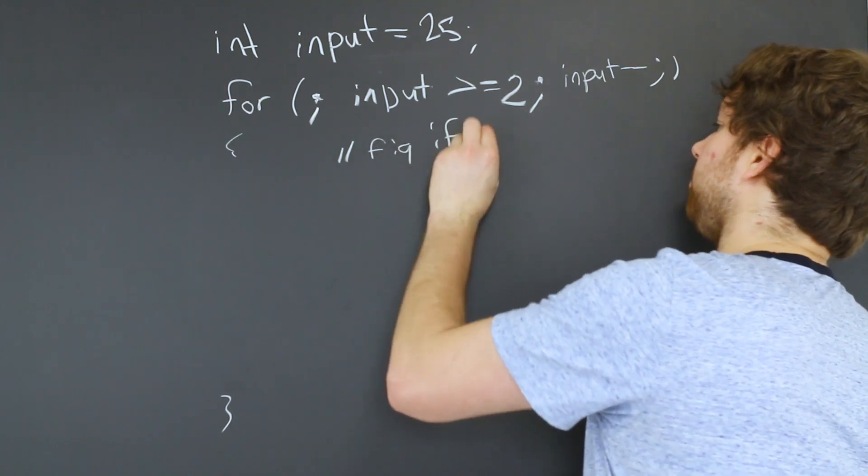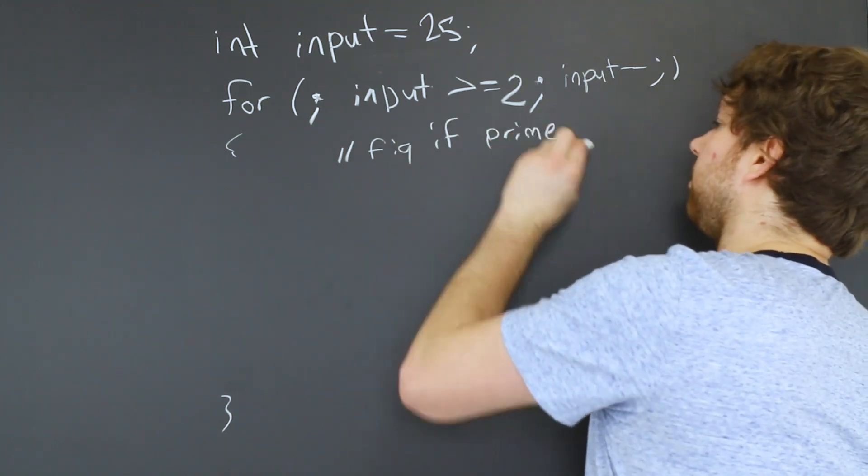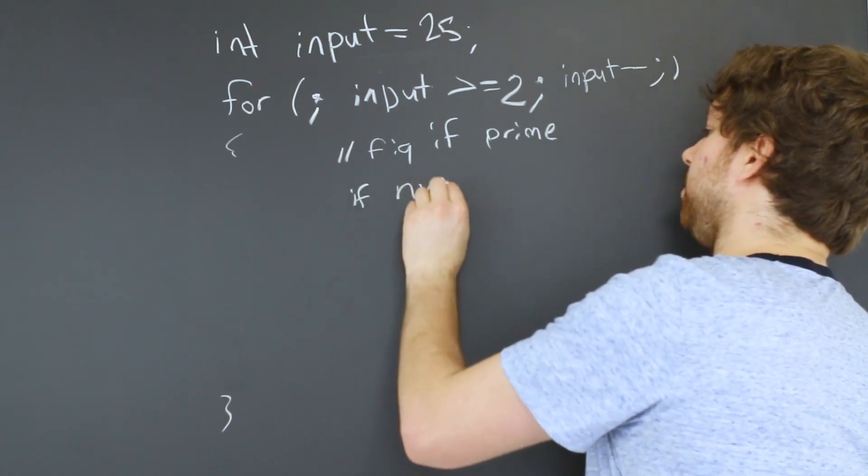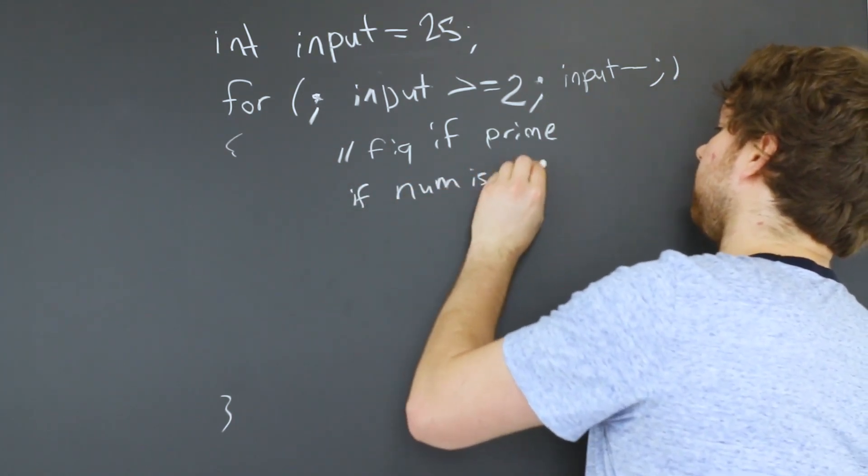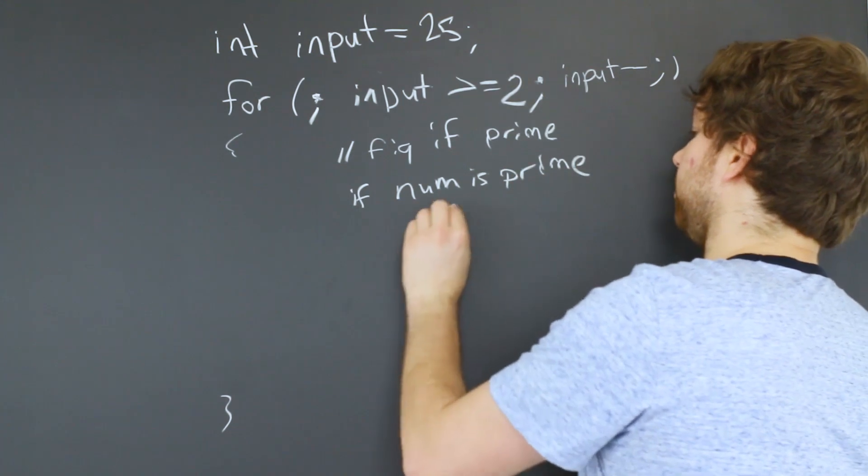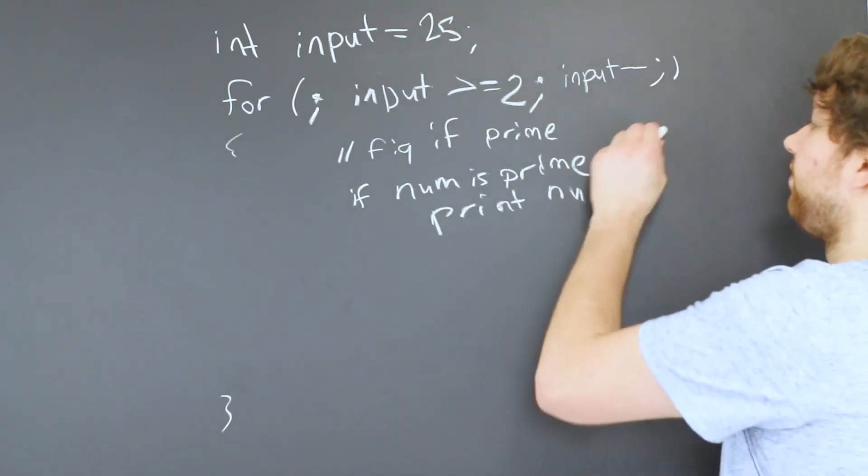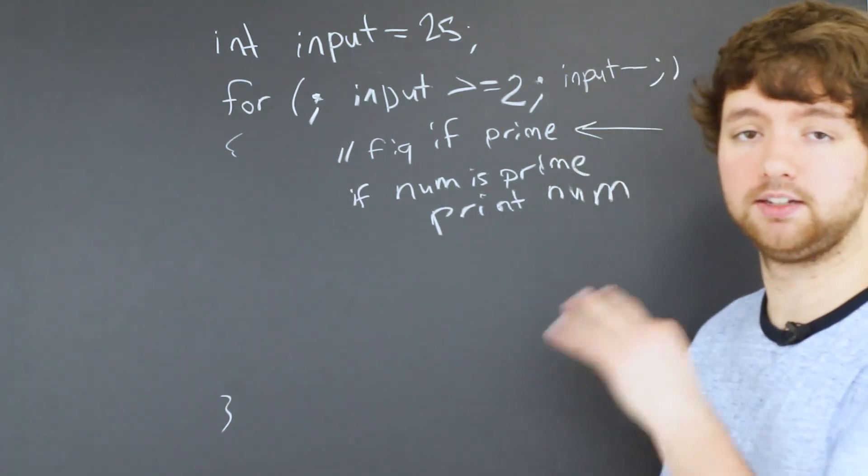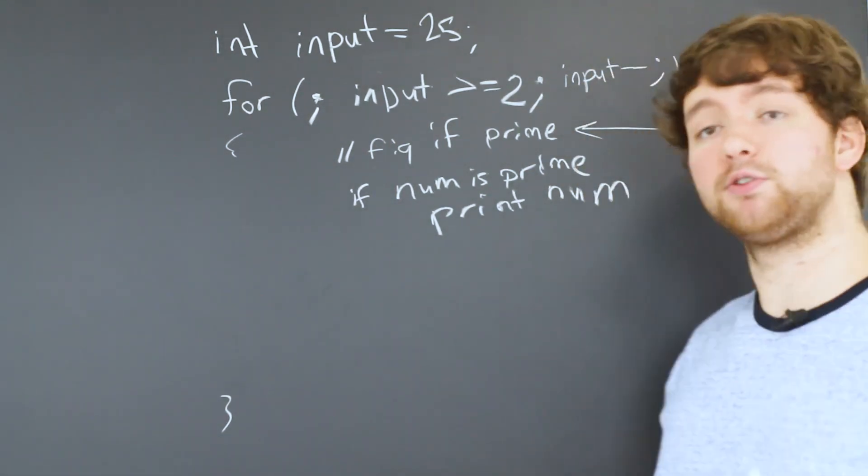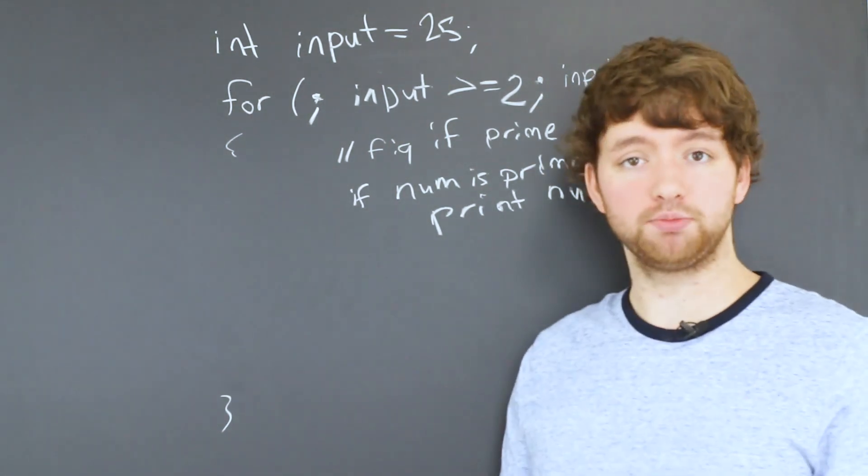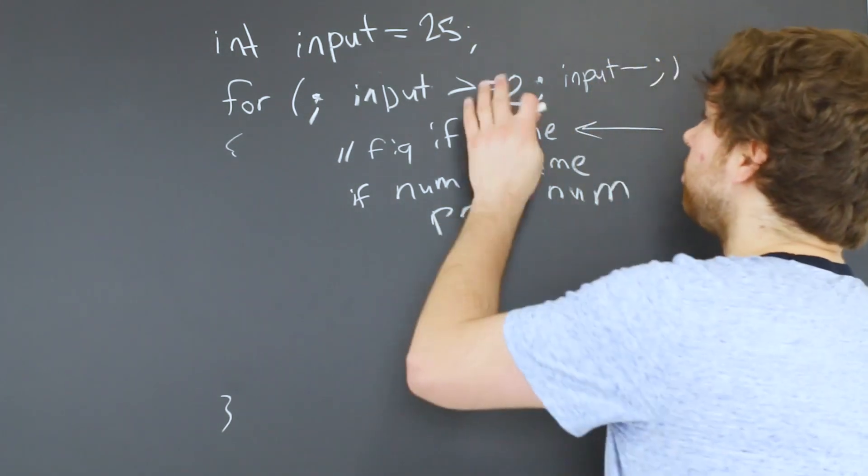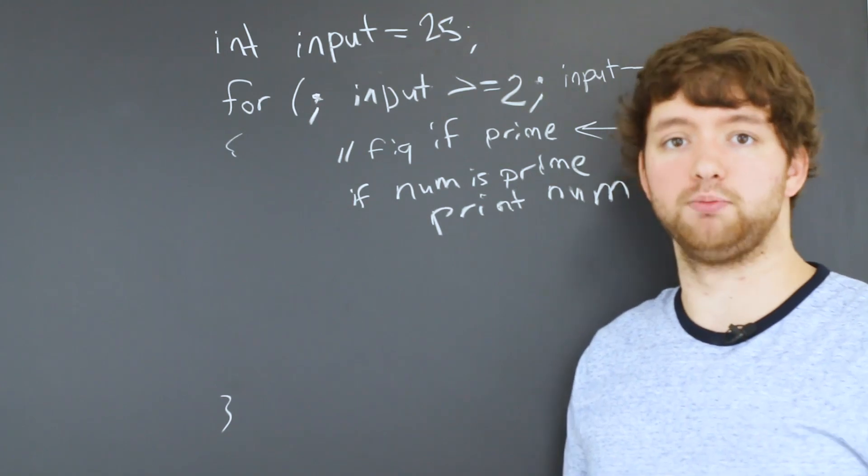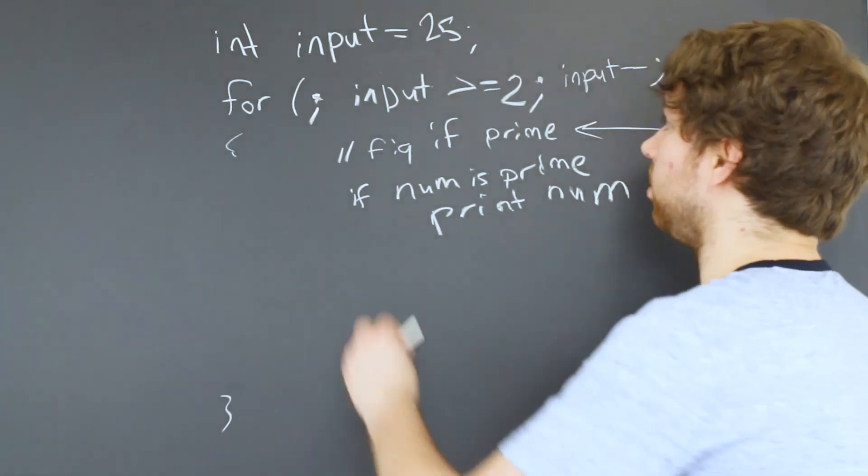And then if num is prime, print the number. To actually figure out if the number is prime, we're going to use another for loop. And we're going to be getting into that in the upcoming videos. And also, if you need to keep track of how many prime numbers there are from 25 down to two, then you will need another variable to increment as we go. So for example, we could have an int, maybe like num prime, we could start that at zero.